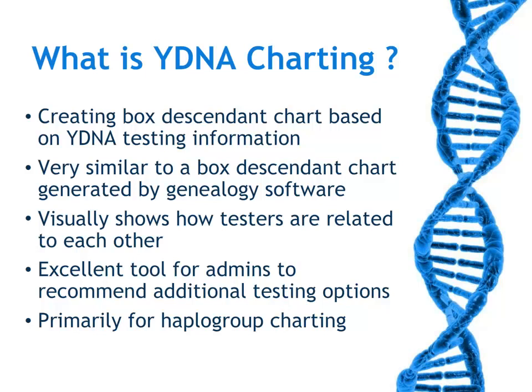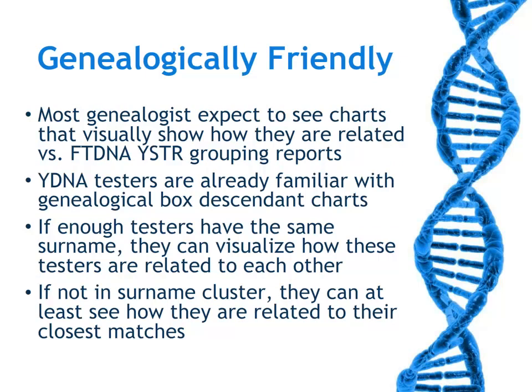Y-DNA charting is primarily used for haplogroup charting, but can also be used for very large surname clusters. This is a very genealogically friendly presentation. Most genealogists expect to see charts to visually show how they're related, versus the family tree and SDR reports, which are just groupings. Y-DNA testers are already familiar with this kind of chart, so it makes the transition from genealogy to genetic genealogy much easier.